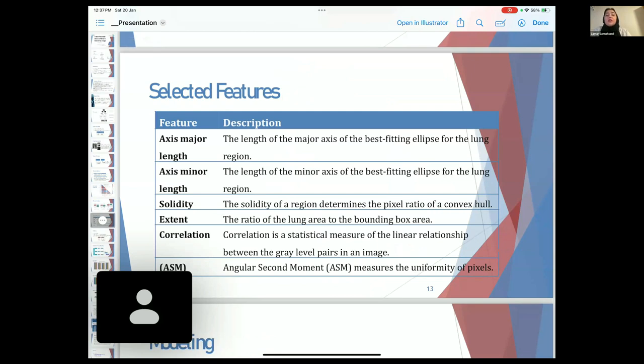Selected features include the axis major and minor length, solidity, extent, correlation, and angular second moment, or ASM.